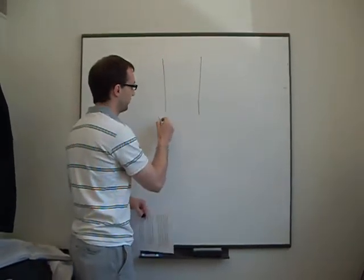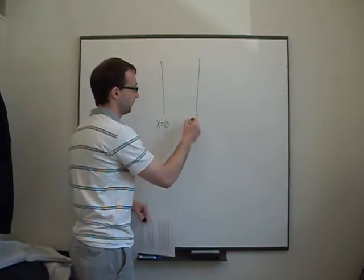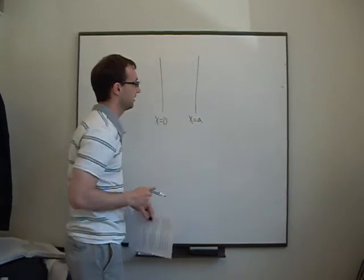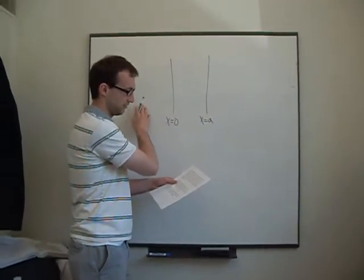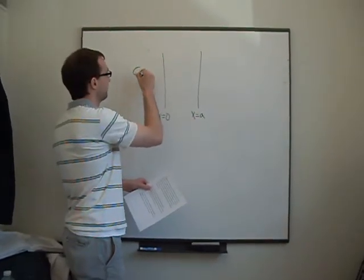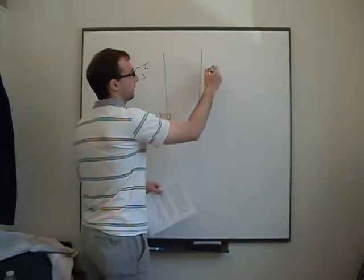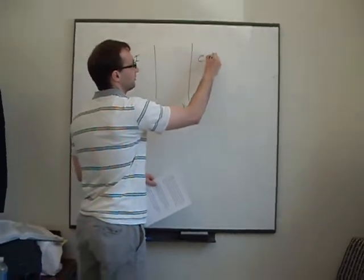So here we have a membrane, x equals 0 on this side, x equals A. And it says on the left-hand side, on x equals 0, you have a concentration of CS1. And on the right-hand side, CS2.